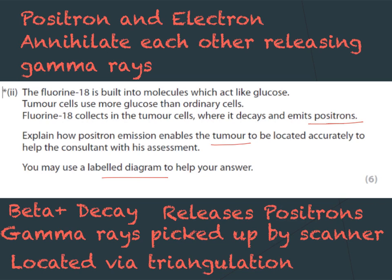For your labelled diagram, you can draw a scanner detecting the gamma rays released following the positron-electron annihilation. For your six marks, the examiners are looking for: the annihilation that releases gamma rays, the beta-plus decay releasing positrons that meet electrons, the fact that gamma rays are picked up by the scanner, and finally that the location is determined via triangulation.